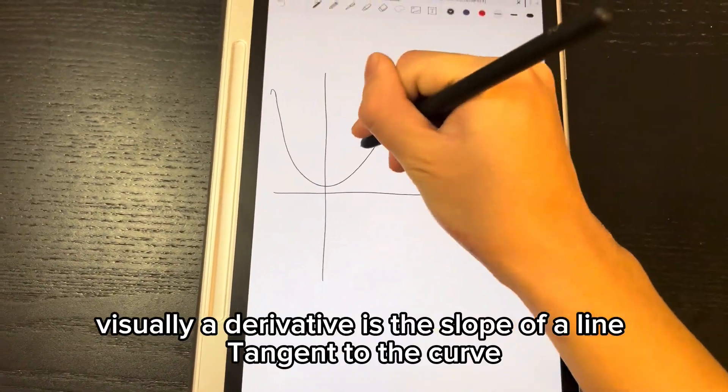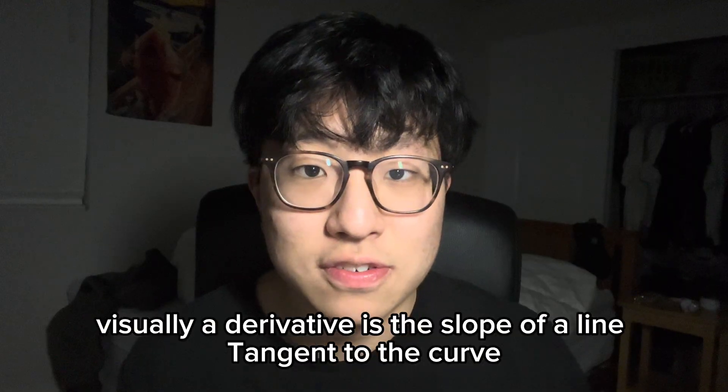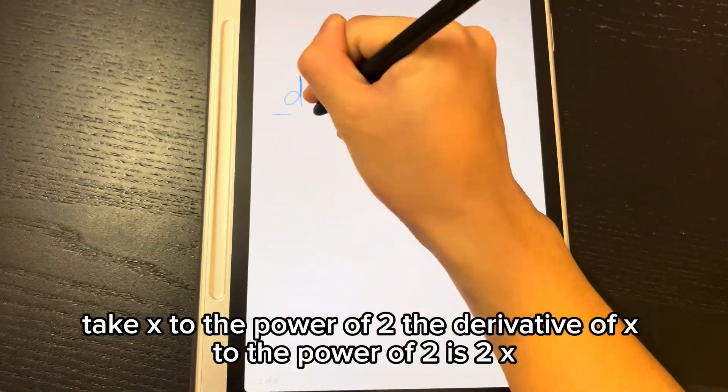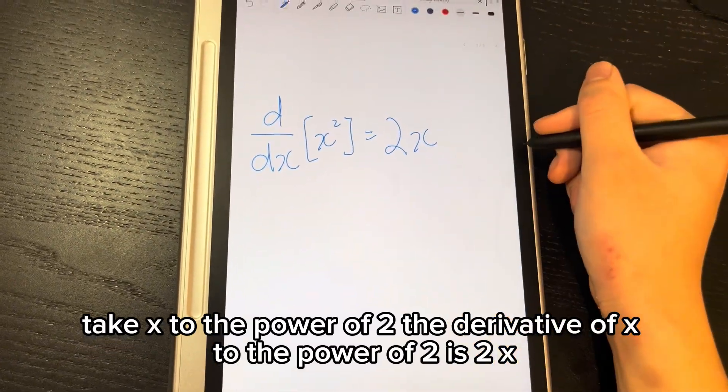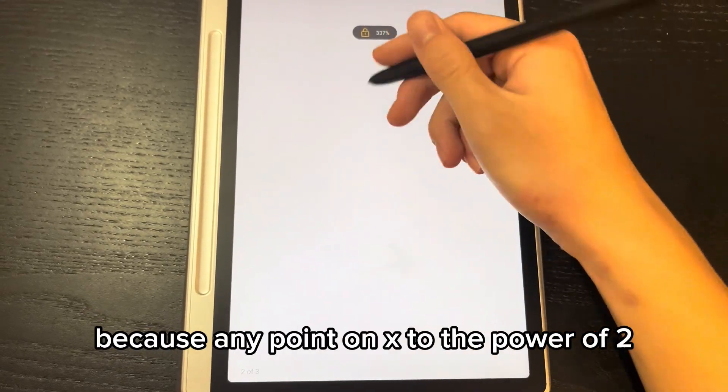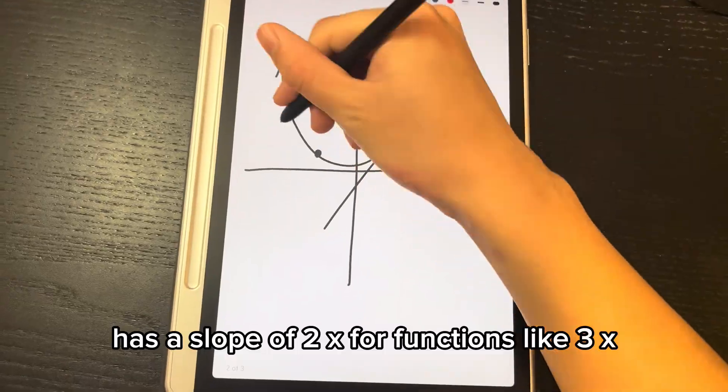Derivatives. Visually, a derivative is a slope of a line tangent to the curve. Take x to the power of 2. The derivative of x to the power of 2 is 2x, because any point on x to the power of 2 tangent to x to the power of 2 has a slope of 2x.